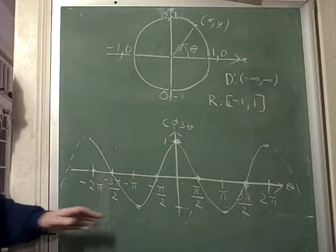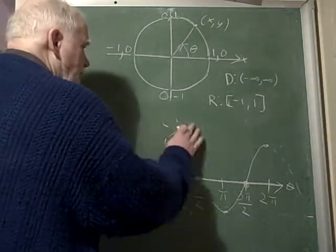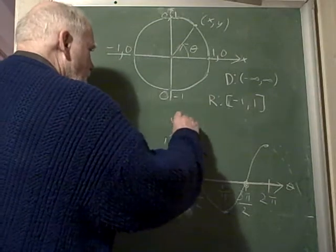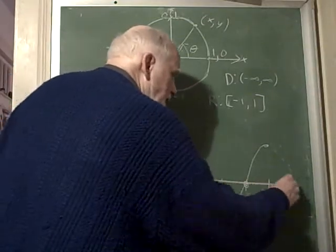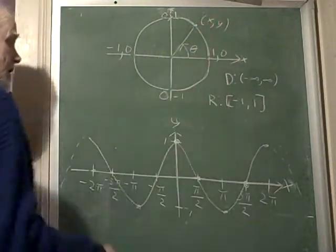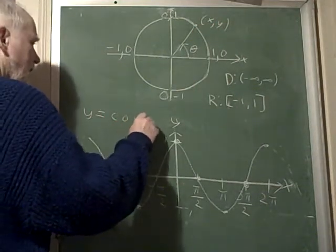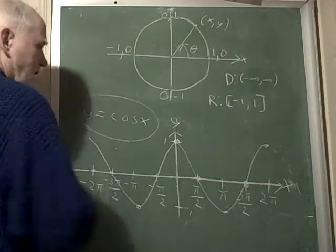And that's a graph of the cosine function. Now, it doesn't hurt to change the names of the variables. I'm going to change this to y, I'm going to change this to x. And these y's and x's have nothing to do with these y's and x's. But now we can say this is y equals the cosine of x. And that's what we graphed.